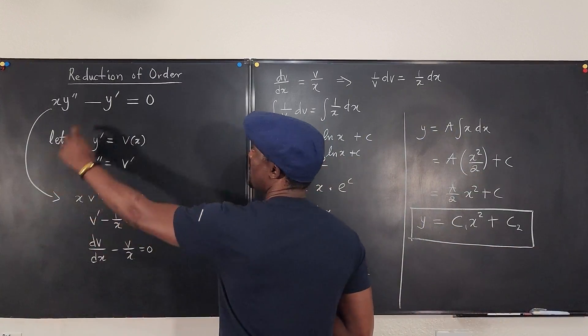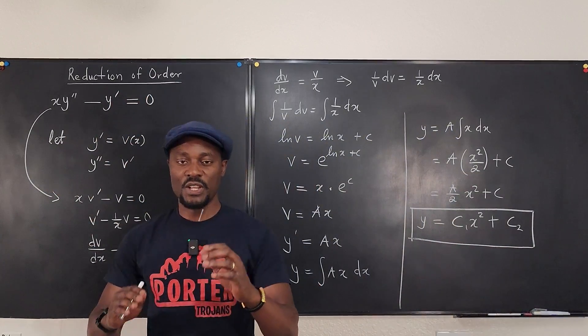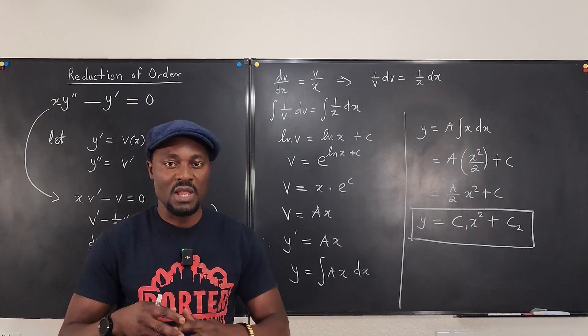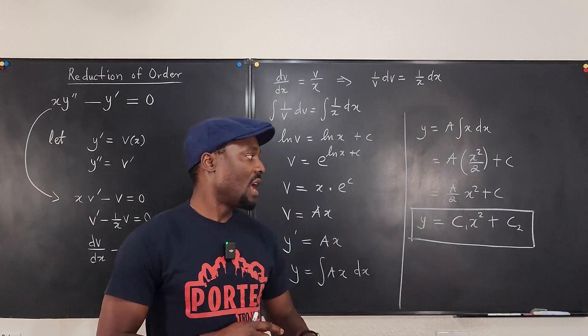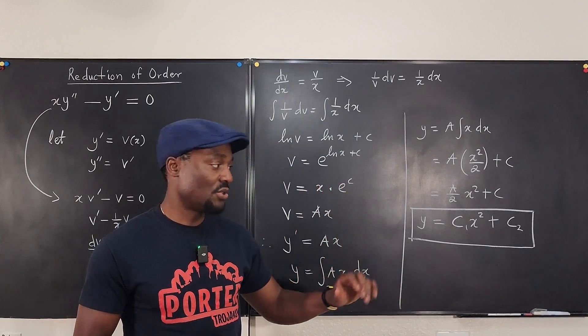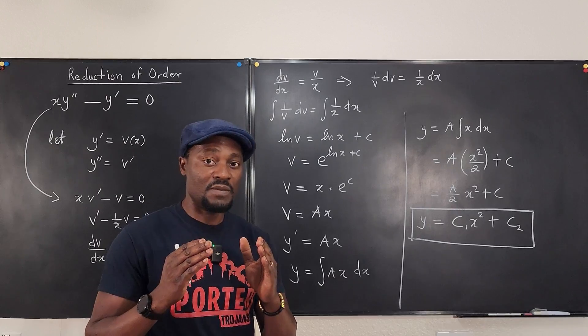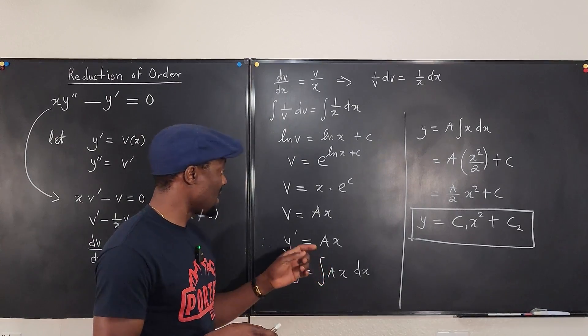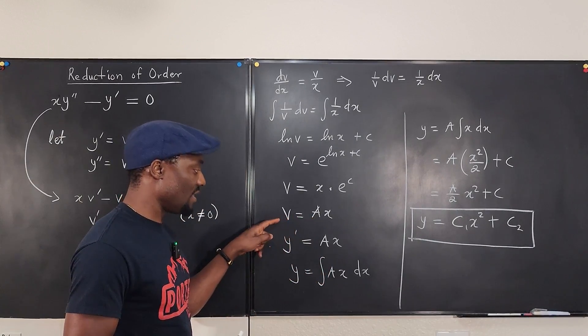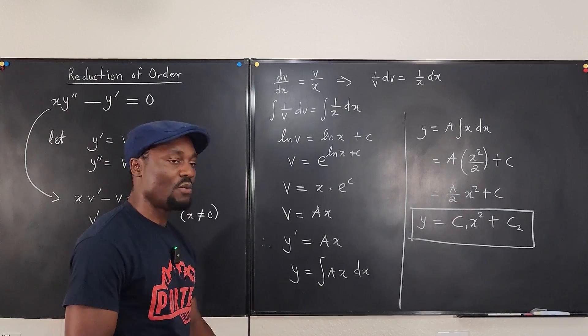So this method is called reduction of order. You just need to replace y prime with a variable. And following the characteristic of the equation, you'll be able to find what v is. And after getting v as a function of x, you can then integrate that. And then you get what you want.